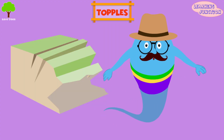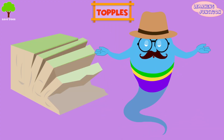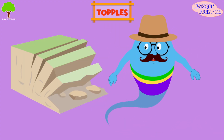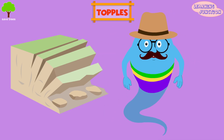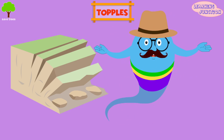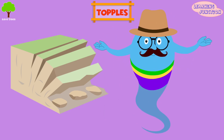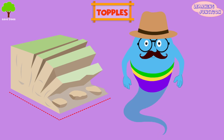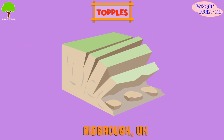Topples: topple landslides occur when a block of rock rotates or tilts. It leads to the formation of a debris cone below the slope called the talus cone. Example: Aldebro, UK.